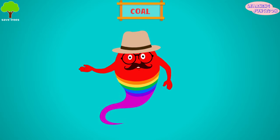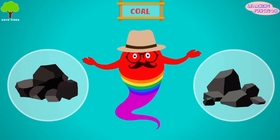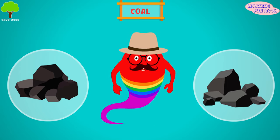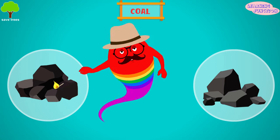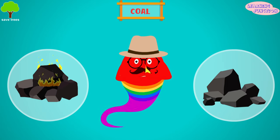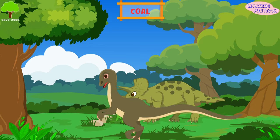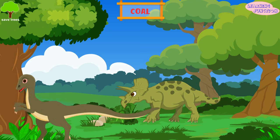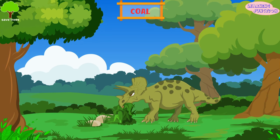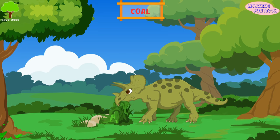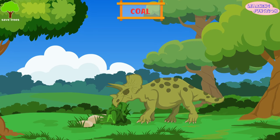Coal. Among the fossil fuels, coal is the most widely used fuel in power plants. It comes in various forms. Some forms burn cleaner and hotter than others. The energy in coal comes from the energy stored by the trees that lived millions of years ago, when our earth was partly covered with dense forests.